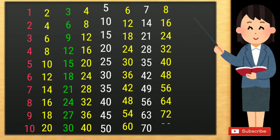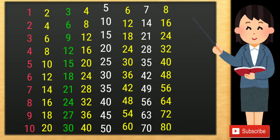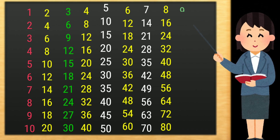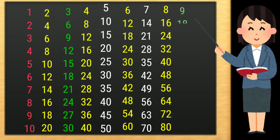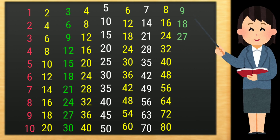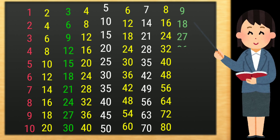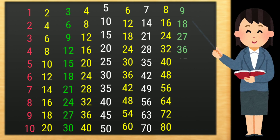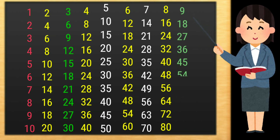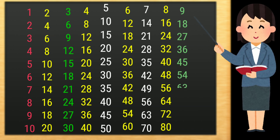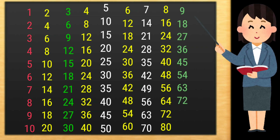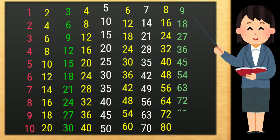8 10s are 80. 9 1s are 9, 9 2s are 18, 9 3s are 27, 9 4s are 36, 9 5s are 45, 9 6s are 54, 9 7s are 63, 9 8s are 72, 9 9s are 81.